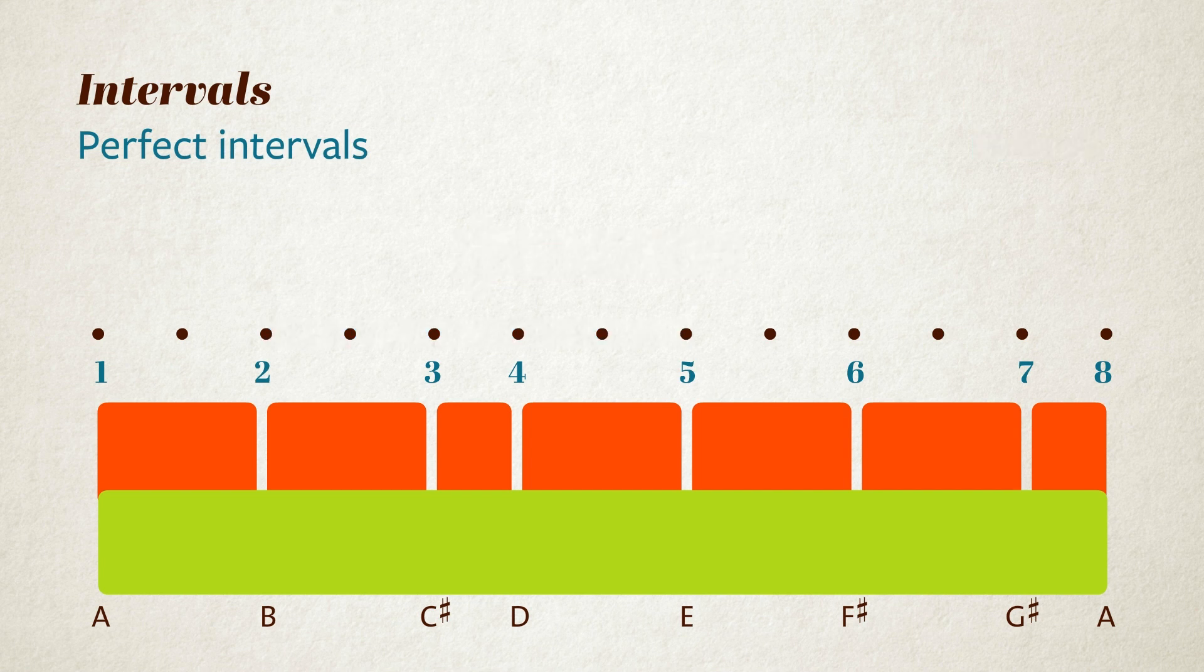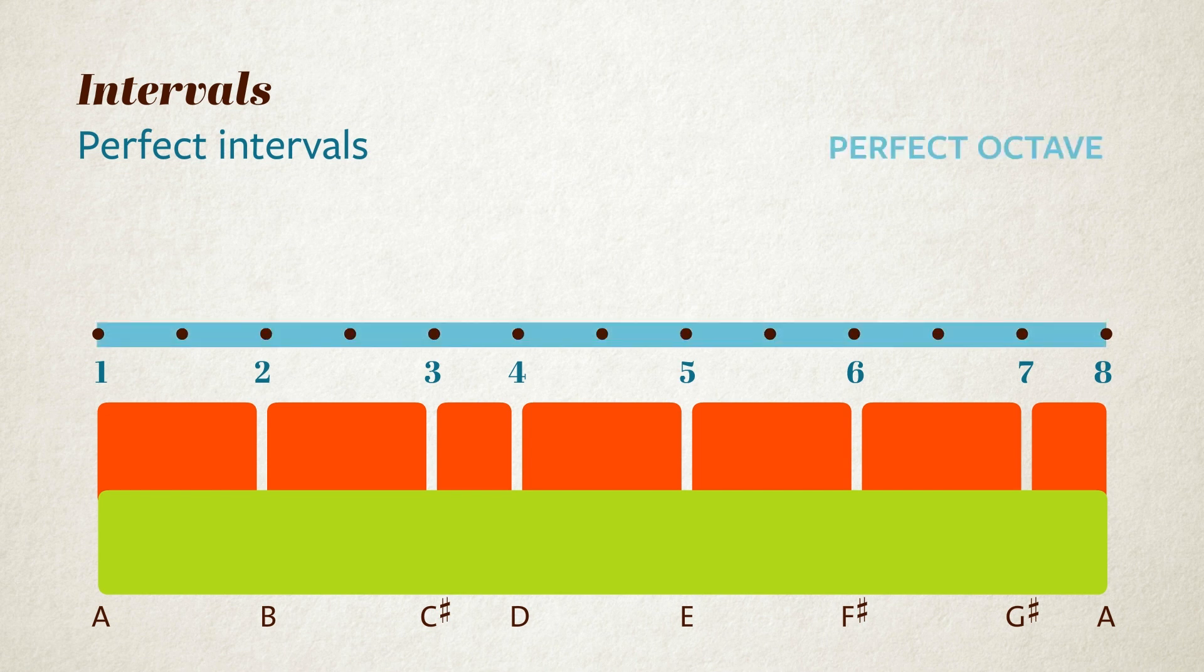These three intervals, the octave, the fifth and the fourth, are especially harmonious or consonant intervals. They are known as perfect intervals. In fact, you hardly ever hear anyone talking about a perfect octave, but you will often hear about a perfect fifth or a perfect fourth.